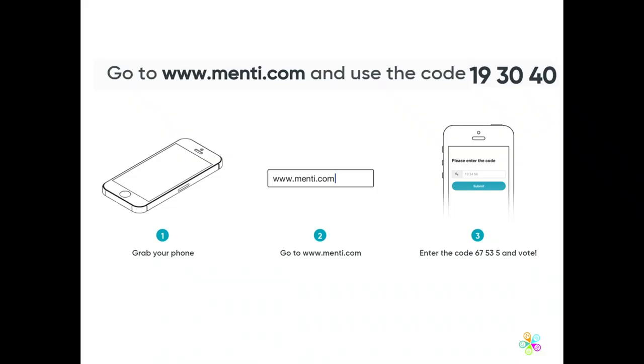We're going to ask you to take out your smartphone — don't worry if you're not on the wi-fi, it's not heavy on data. We use this tool quite a lot — it's free, it's called Mentimeter. Open a browser and go to menti.com, and you'll be asked to put in a code. The six digits are on the screen.